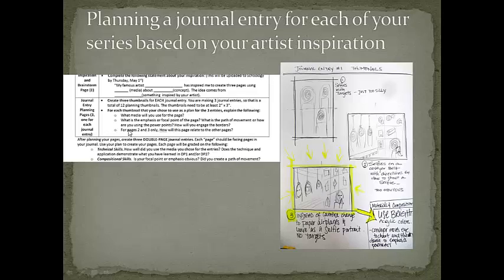The last thing you need on your planning page is a sentence about how you're going to use the concept and create the composition. So it says use bright acrylic colors, and the conveyor belt is going to move the eye to the chart in the background and then down to the emphasis portrait. Make sure you have a statement like this on each one, and for pages two and three, explain how they will relate to each other.